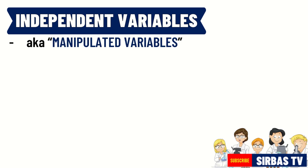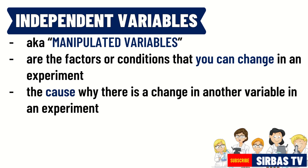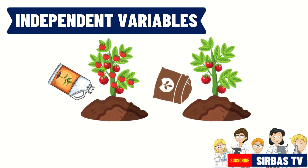Independent variables are also called the manipulated variables. Independent variables are the factors or conditions that you can change in an experiment. These are the variables that you change or manipulate to see their effect on the experiment. The independent variable is the cause when there is a change in another variable. In the case of type of fertilizer versus number of fruits yielded, the type of fertilizer is the independent variable — the condition we manipulated to see its effect on the number of fruits that will be yielded.